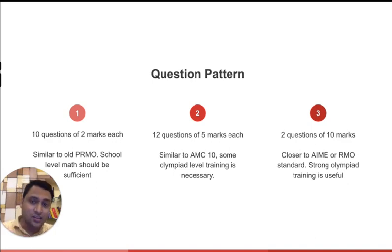The second section, the 12 questions of 5 points each, we expect them to be similar to American Mathematics Competition 10. If you have not seen this contest before, you can Google it. I have put a link in the description for the topic-wise problem sets on AMC 10. You can use that as well. And some Olympiad-level training is necessary for attending these 12 questions. So these will be a little bit more difficult from the 10 two-pointers.